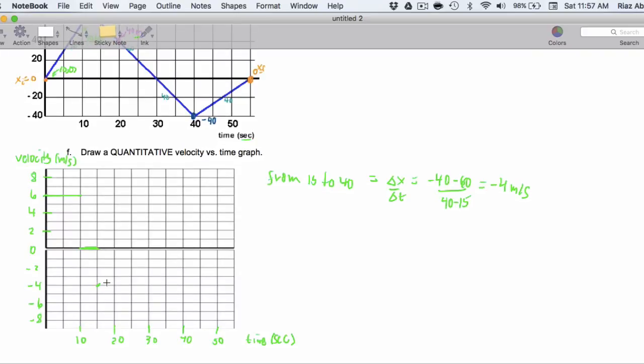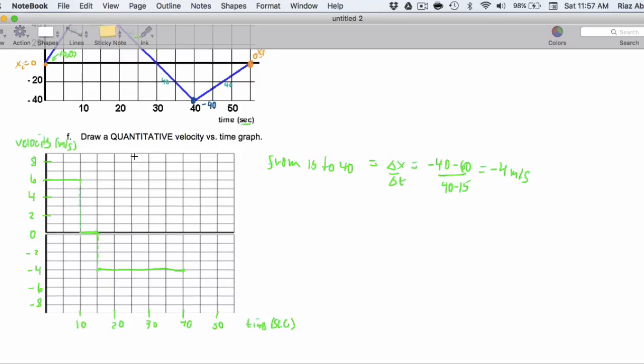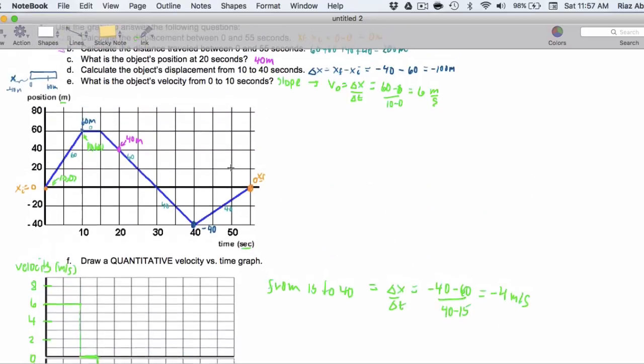So, that slope from 15 seconds all the way to 40 seconds is negative 4. So, I'll go all the way out to here and draw the line like that. If you want to draw little dots connecting these, that's fine. It's not required. And then, this is a terrible color. Sorry about that.